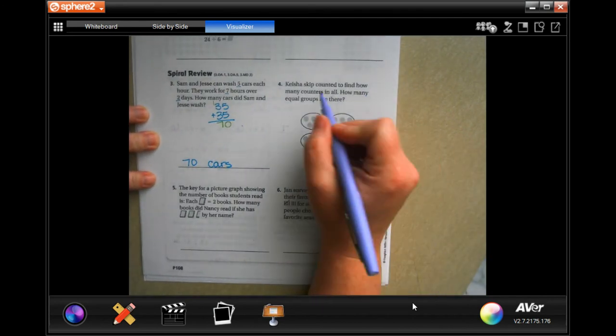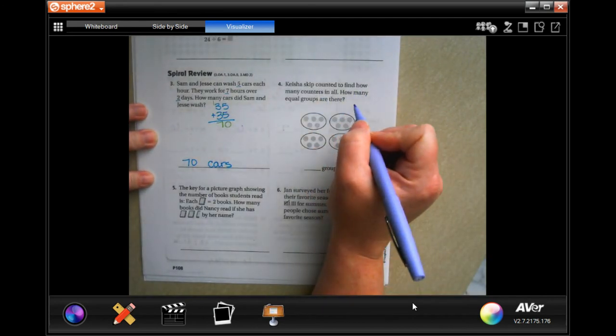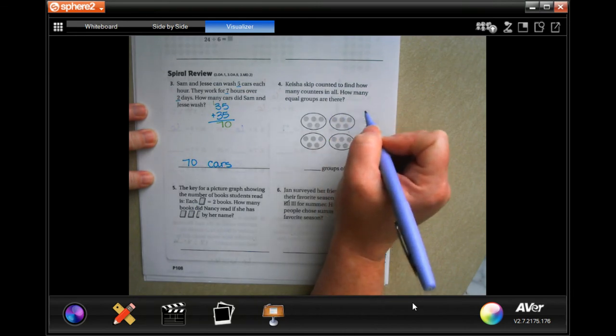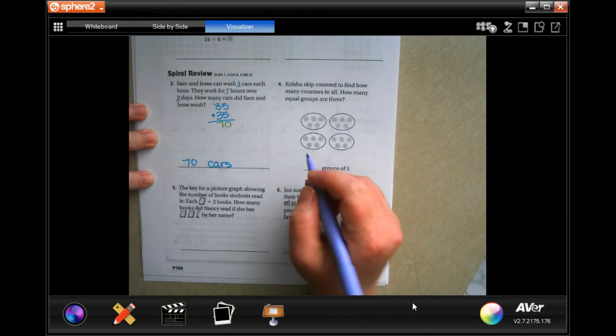She should skip count to find out how many characters in all. How many equal groups are there? Well, there's one, two, three, four groups.